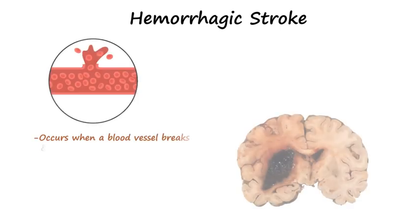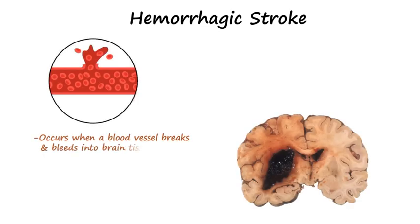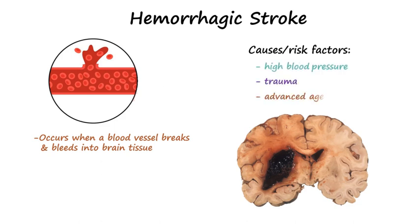Hemorrhagic strokes occur when a blood vessel breaks and bleeds into brain tissue. Two leading causes are high blood pressure and trauma. Advanced age can also increase the risk. Hemorrhagic strokes are less common compared to ischemic strokes, but have a higher fatality rate.